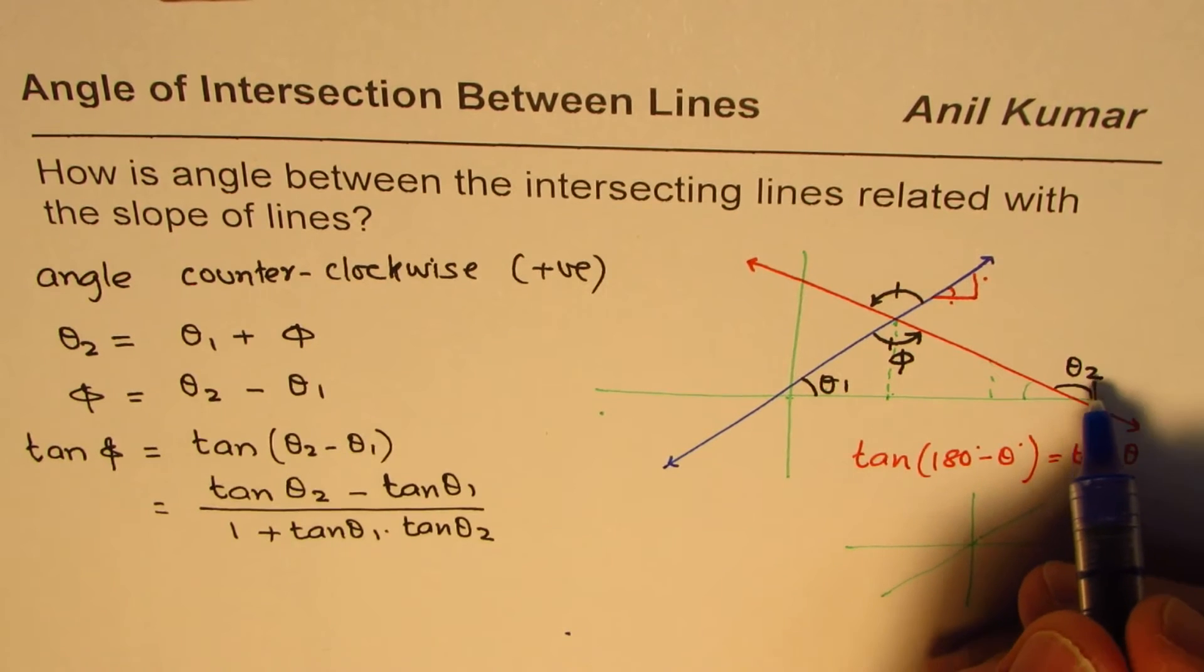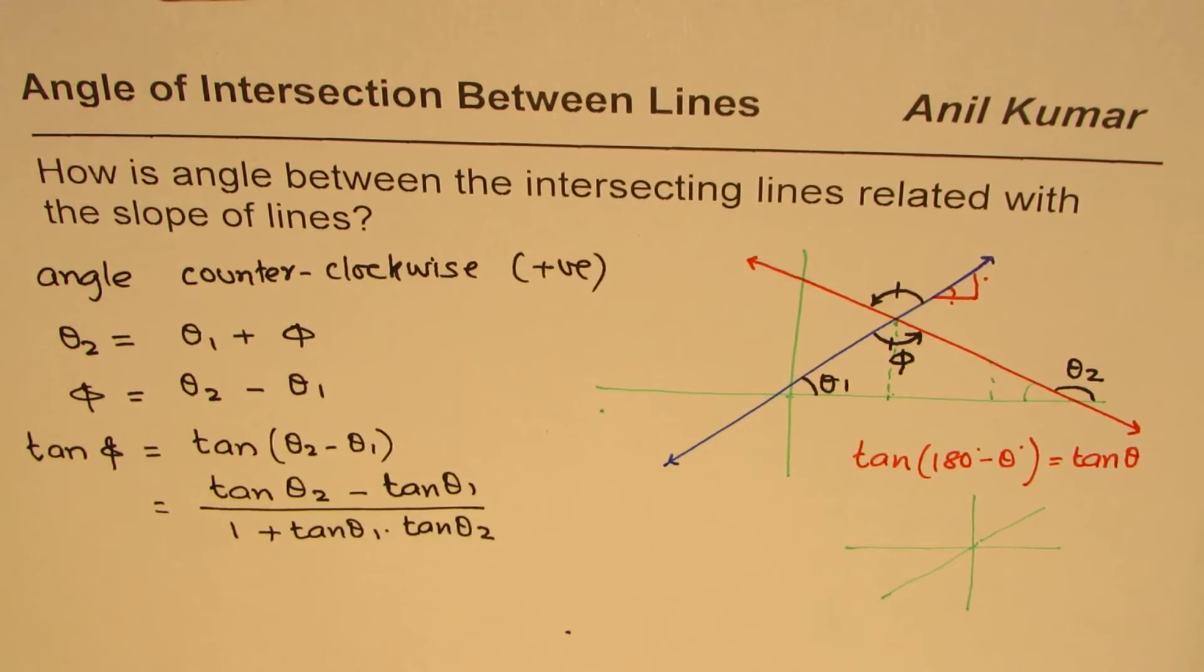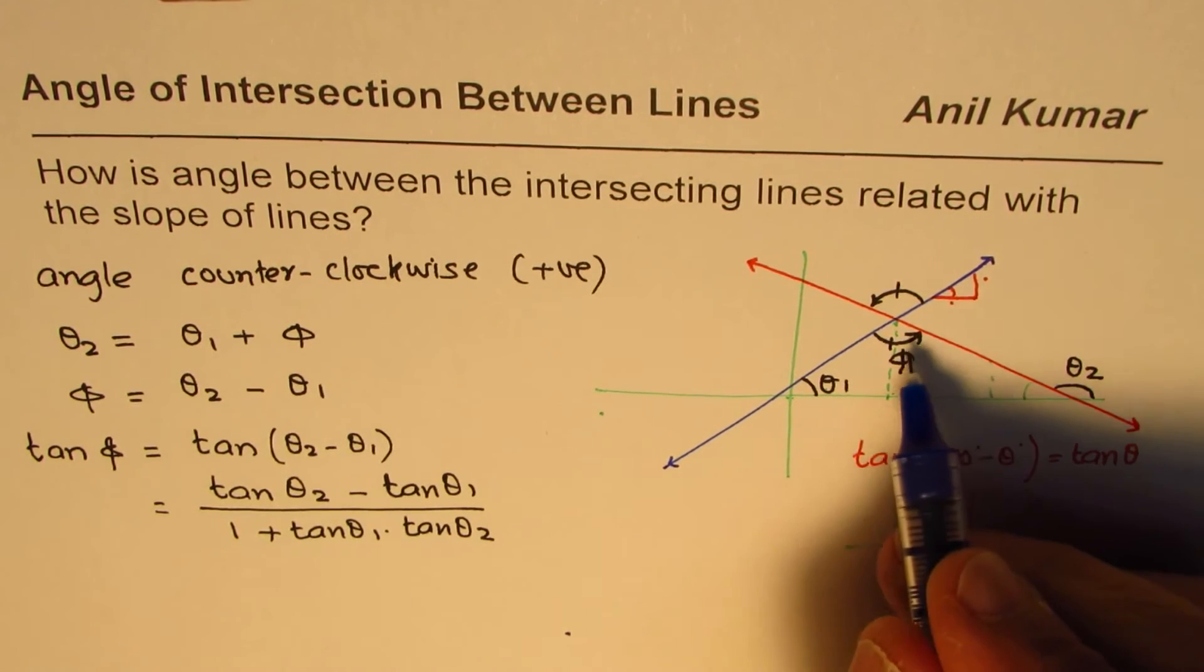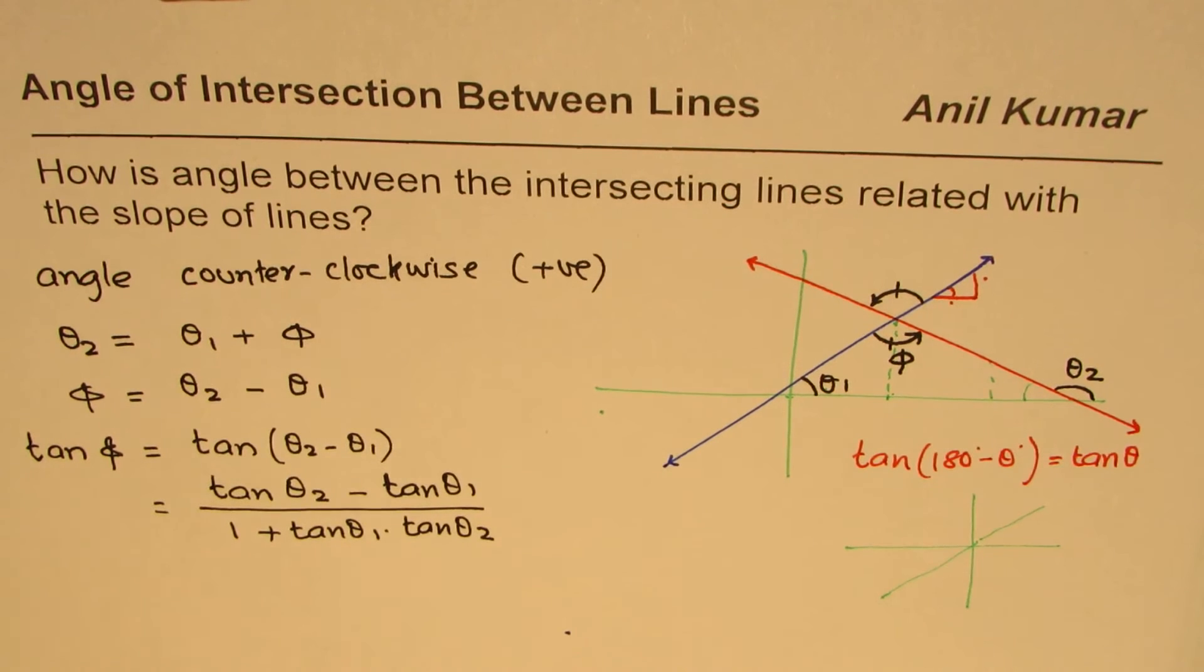So tan of theta 2 whether you take this angle or that angle, tan value is going to be same. So in this case it is going to be rise over run so it is the slope. So it is still the same thing which is slope.